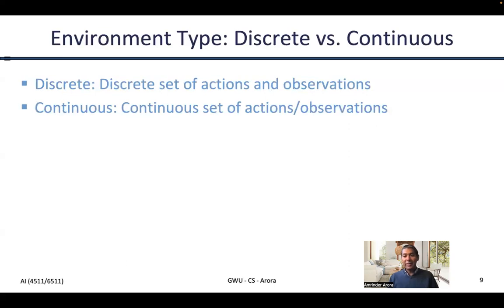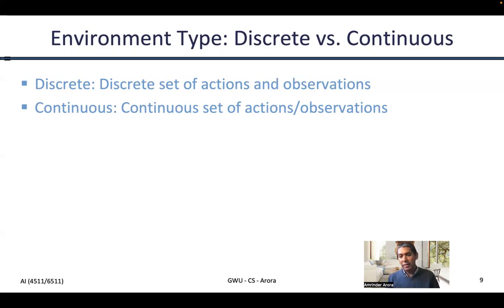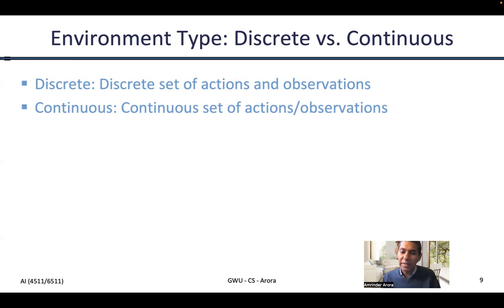If your action can be something like 'go 37.58 degrees north of east,' and there is no such discrete interval where that's defined, then the environment is said to be continuous. Most real world physical environments are continuous, but most digital world environments are discrete. The reality sometimes sits in between.